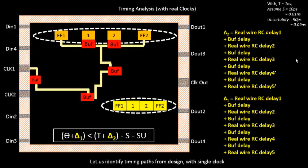Once we are done with the clock net shielding, the next step is to do a quick timing analysis with the real clocks, since now we have the clock tree in place. Everything in the timing will change because we are introducing new logic which was not present as part of your netlist. With this new logic introduced, it makes sense to do a round of timing analysis to check the current timing scenario.